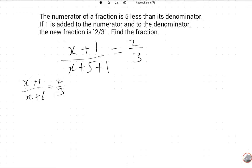Cross multiply: 3 into (x+1) is equal to 2 into (x+6).